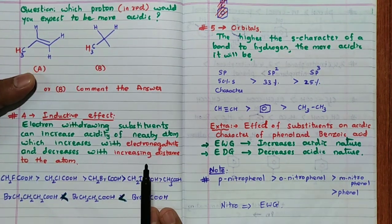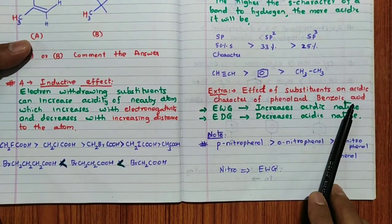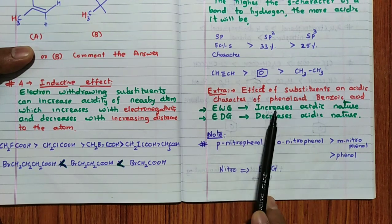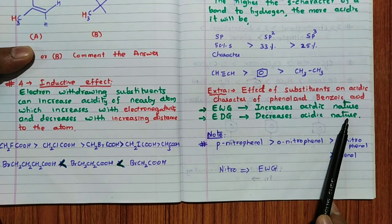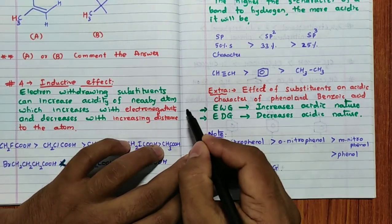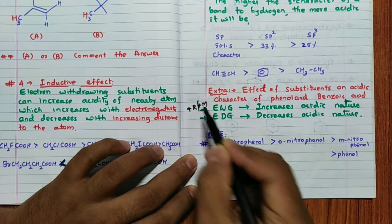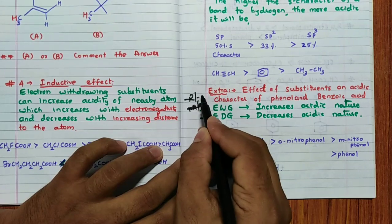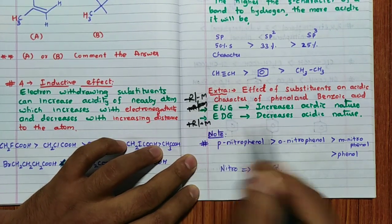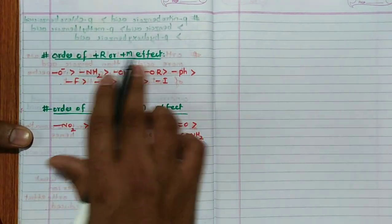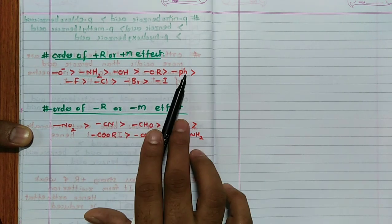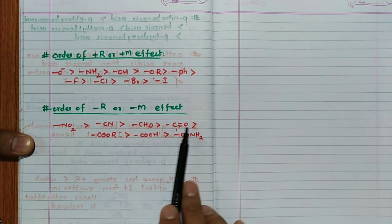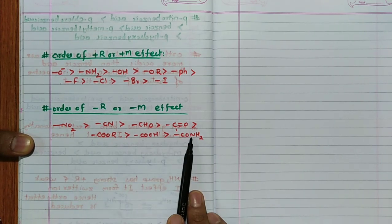Now for something extra — the effect of substituents on the acidic character of phenol and benzoic acid. Electron-withdrawing groups increase acidic nature; electron-donating groups decrease acidic nature. Electron-withdrawing groups show a −R or −M effect; electron-donating groups show a +R or +M effect. The order of +M (electron-donating) strength is: O⁻ > NH₂ > OH > OR > Ph > F > Cl > Br > I. The order of −R (electron-withdrawing) strength is: NO₂ > CN > aldehyde > ketone > COOR (ester) > COOH > CONH₂.